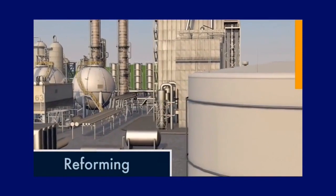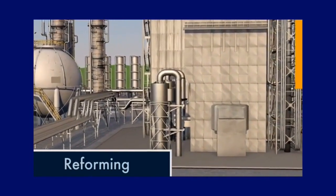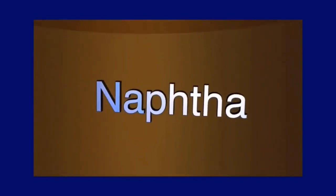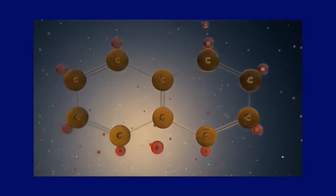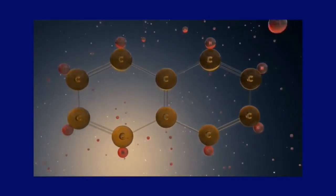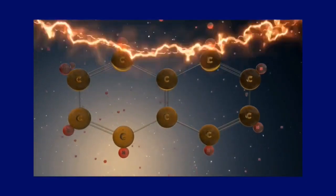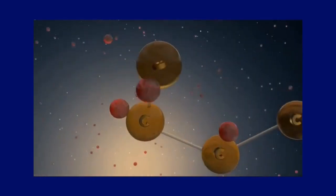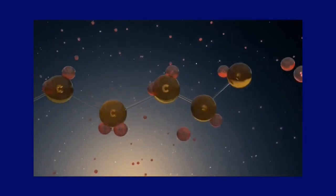Reforming is a process that increases the amount of gasoline produced from crude oil. One of the products separated in the distilling process is a liquid called naphtha. The number of carbon atoms in naphtha is about the same as the number found in gasoline, but their structure is more complex. Reforming rearranges the naphtha molecule, turning it into a usable, gasoline-like molecule.